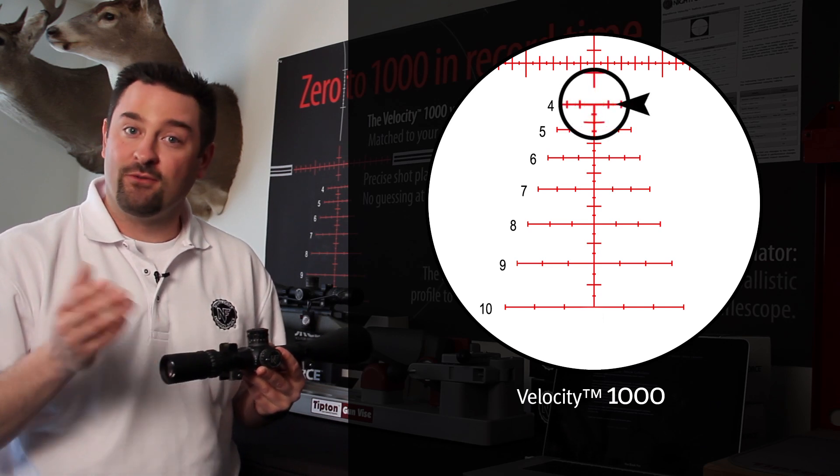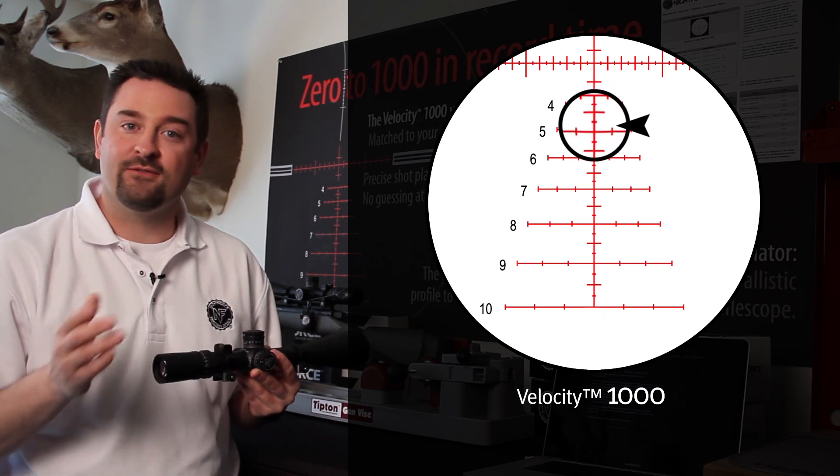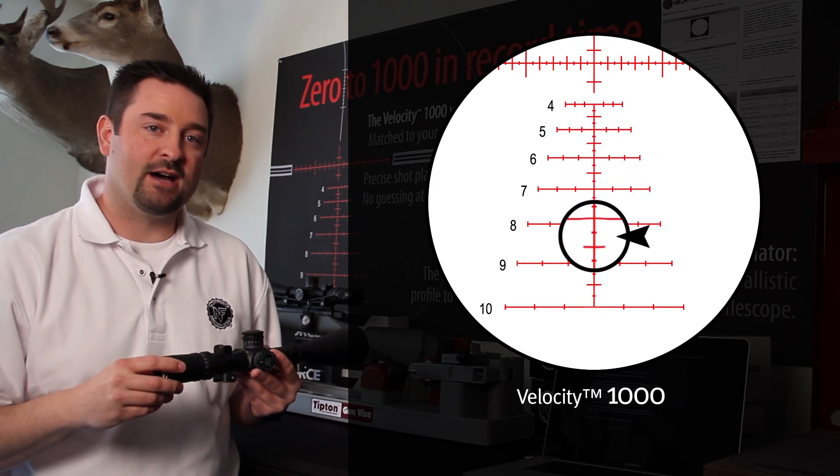So for example, 400, 425, 450, 500, etc., all the way down to 1,000.